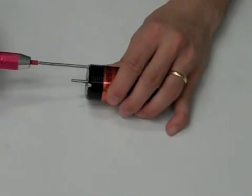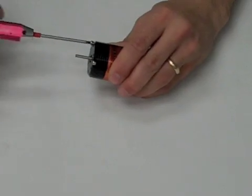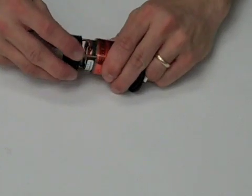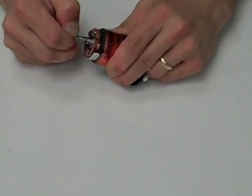The first step is to remove the three large screws from the front side of the motor. Now remove the end bell and slowly slide the rotor from the motor.